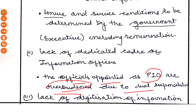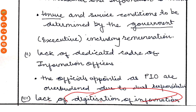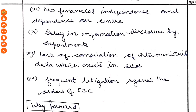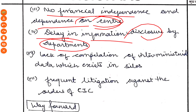The officers have dual responsibility — they are performing two roles simultaneously, which is a problem and a key issue. There is also a lack of digitization of information. If you watch videos of most toppers, you will notice they focus heavily on digitization — technology should be used, and information is not being provided digitally. This is another issue. There is also delay in information disclosure by departments — departments delay disclosing information, which is a very significant point seen across most bodies. Financial dependency is another issue found in most regulatory bodies.